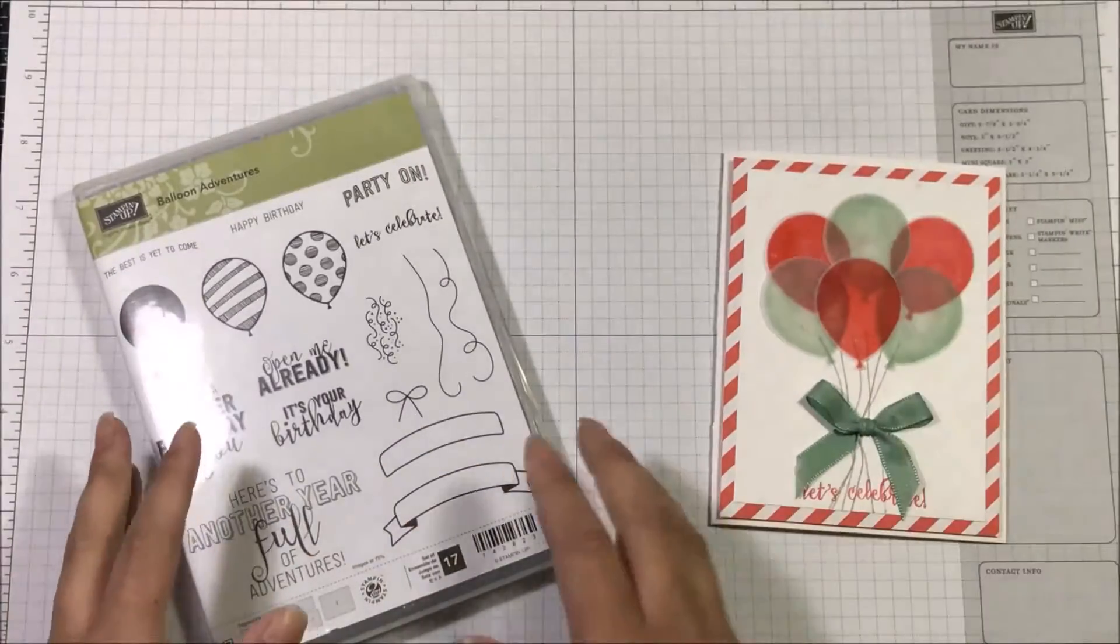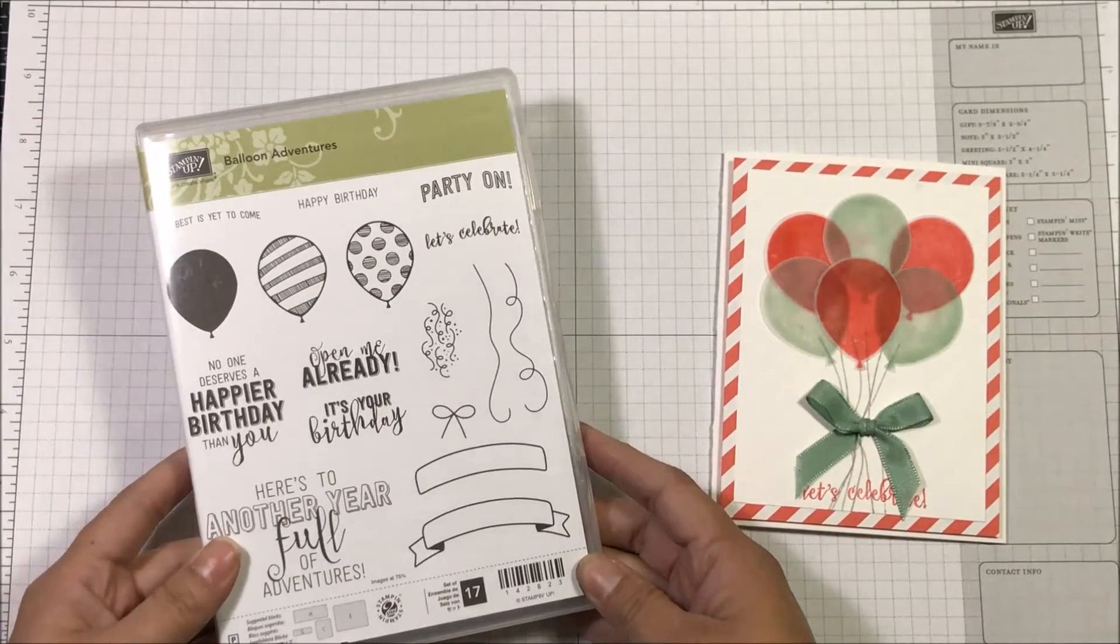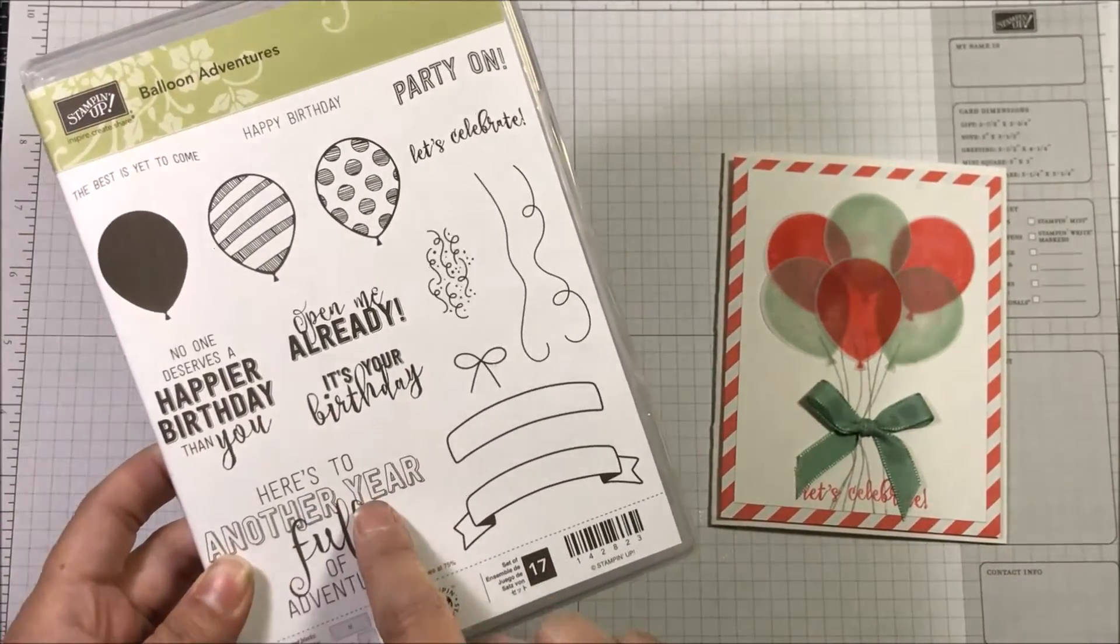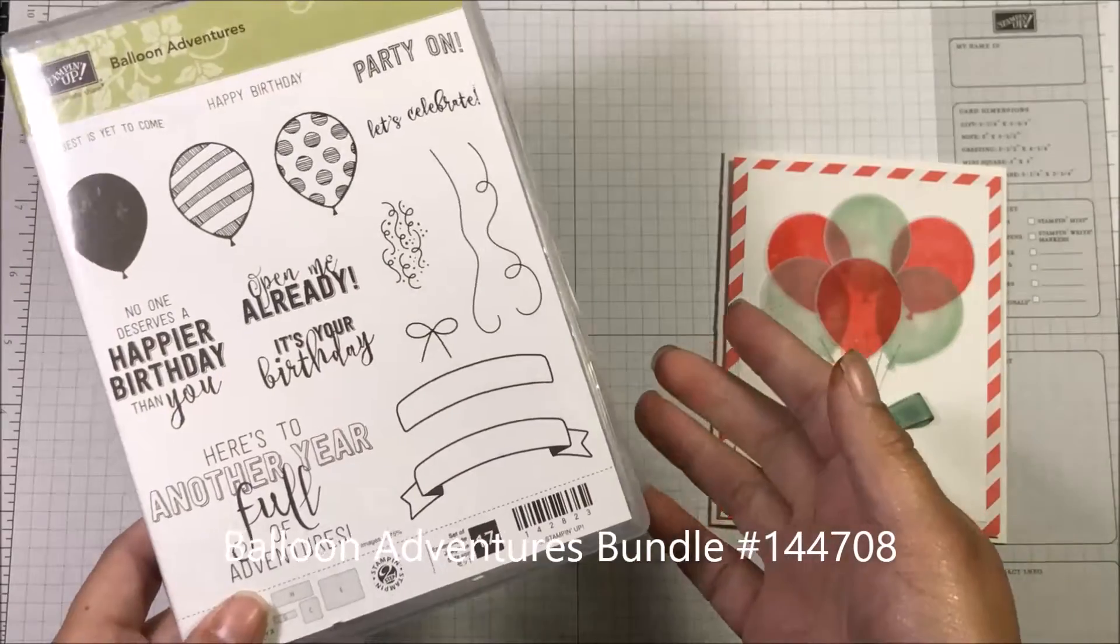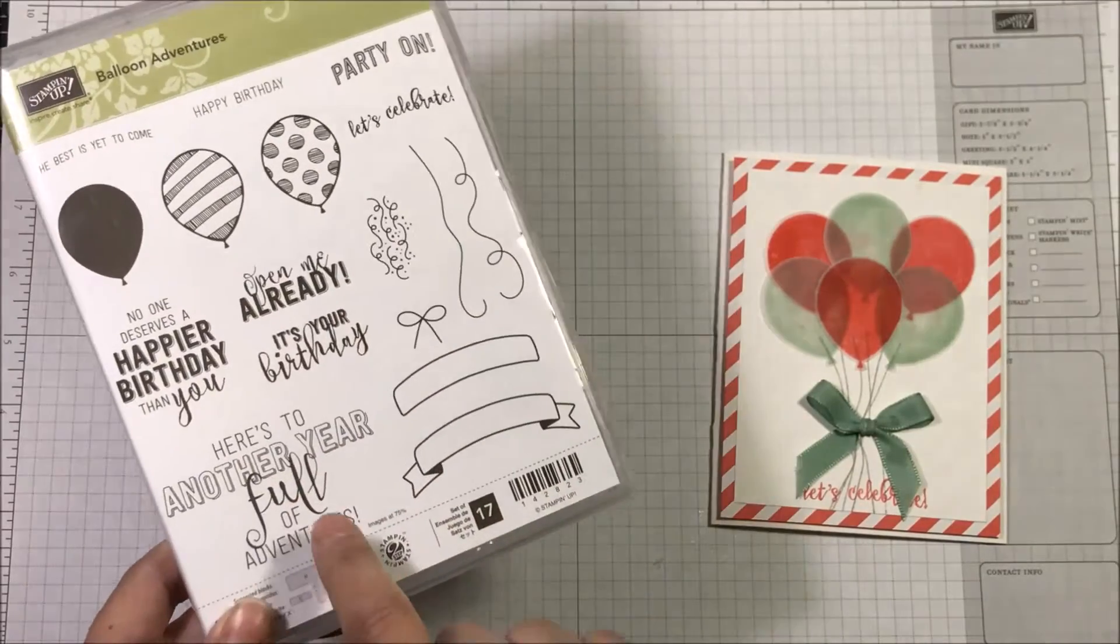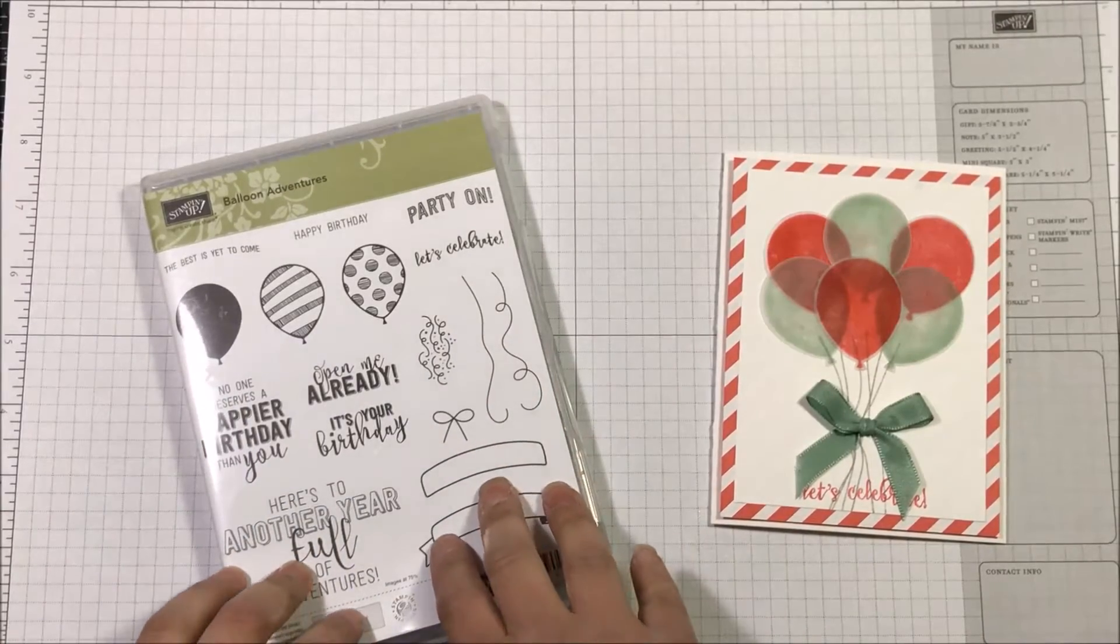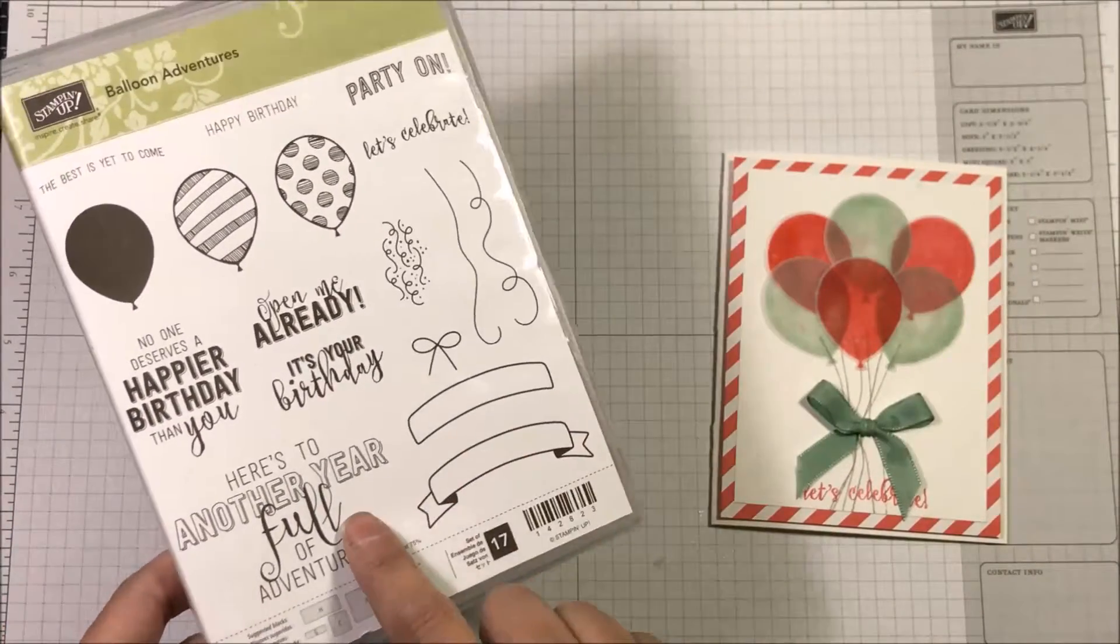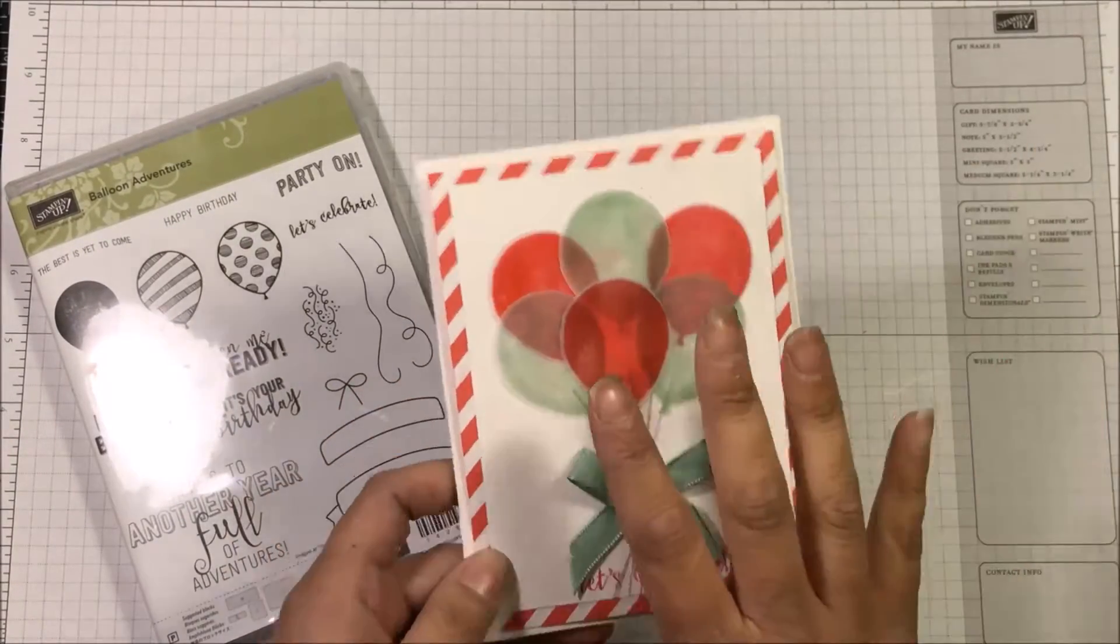So I pulled out this stamp set and then I was like, where are the dies that go to this stamp set? I could not find them anywhere. But then I remembered that I actually got this stamp set at a Stampin' Up! event in November for free. And so because I got the stamp set, I just didn't, it didn't cross my mind that I hadn't ordered the coordinating dies. So I will be doing that so that I have them because they look really cute together. And they do come in a bundle, but when you earn the stamp set for free, it's still cheaper just to buy the dies, right?